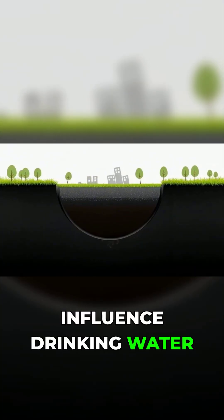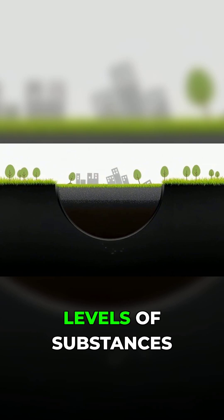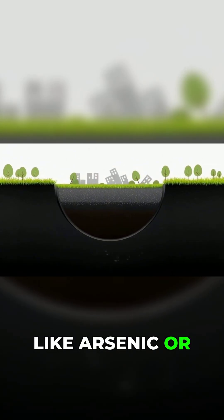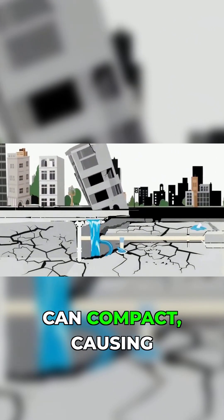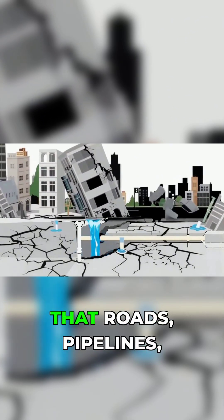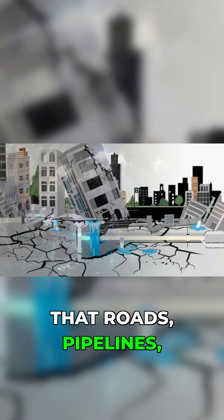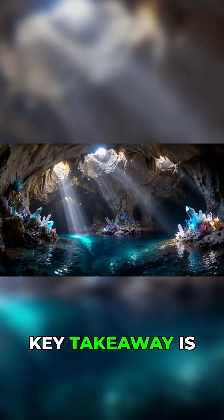Aquitards also influence drinking water quality by affecting levels of substances like arsenic or nitrate. And when groundwater is pumped, these fine-grained layers can compact, causing land subsidence that damages roads, pipelines, and buildings. The key takeaway is simple.